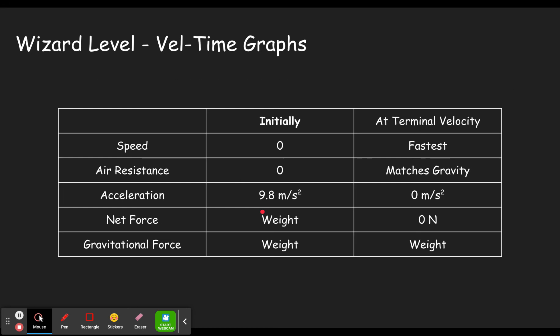So this is just a summary really of what we just said, and that summary is going to also get you through the wizard level. So remember initially the speed will be zero because you're just falling out of the plane. At terminal velocity, you'll reach your fastest velocity for the body position that you're using. Air resistance starts at zero because you're not moving. So you're not bumping into any air vertically.